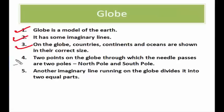You will see some imaginary lines on a globe. It is difficult to describe the location of a point on a sphere like the earth, so that is where these imaginary lines come into play. We need certain points of reference and lines to find the location of a place. On a globe, a needle is fixed through it in a tilted manner — this is called its axis. The two points through which the needle passes are the north pole and south pole. There is also an imaginary line that divides the globe into two equal parts, known as the equator.